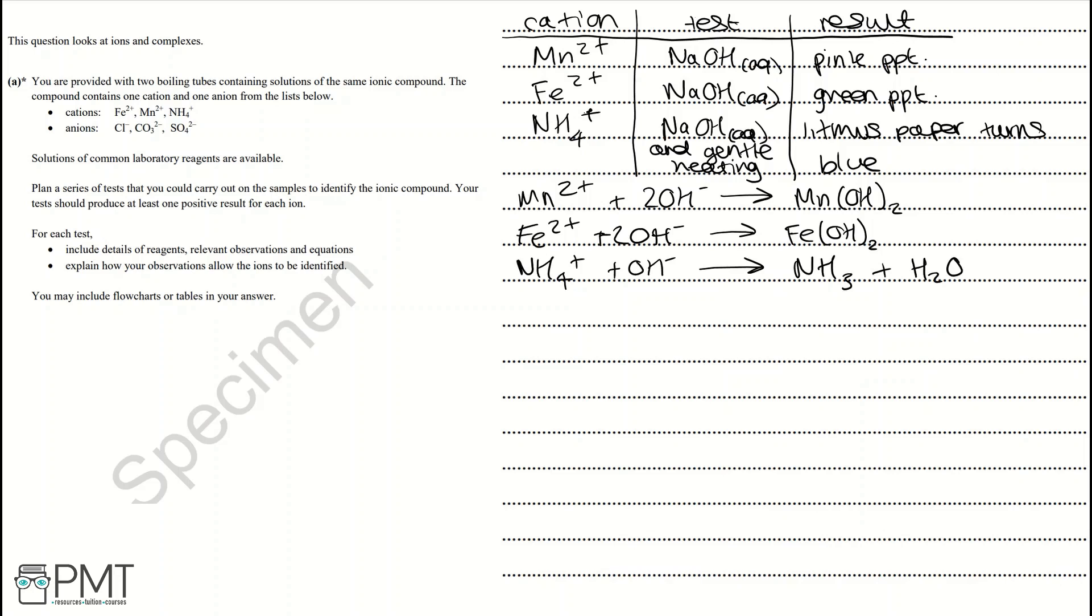Now we're going to look at our anions and our tests for our anions in the question. We're going to lay this out as a table with the anion, the test, and the result. We're given three different anions: a carbonate ion, a sulfate ion, and a chloride ion. We're going to test the carbonate ion with nitric acid, the sulfate ion with barium nitrate, and the chloride ion with silver nitrate.